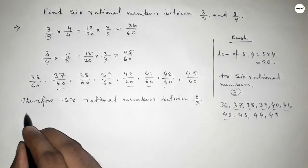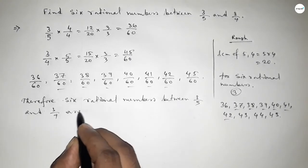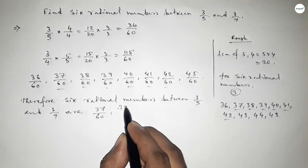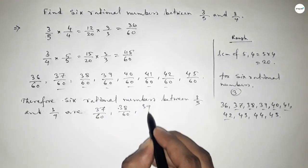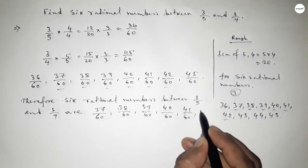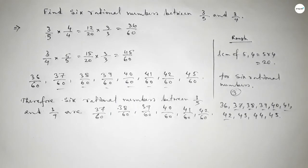Therefore, 6 rational numbers between 3 over 5 and 3 over 4 are: 37 over 60, 38 over 60, 39 over 60, 40 over 60, 41 over 60, and 42 over 60. So this is the process to find out 6 rational numbers between 3 over 5 and 3 over 4. Thank you.